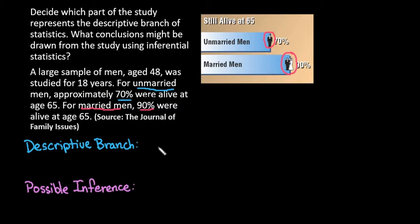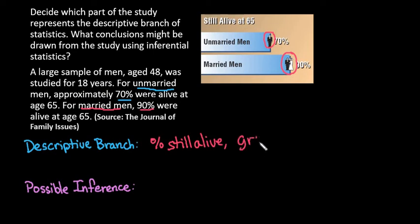The descriptive branch would be the percentages — the percent still alive — and the graphic display. So the graph and the 70% and 90% figures for each of our groups would be our descriptive branch of statistics.